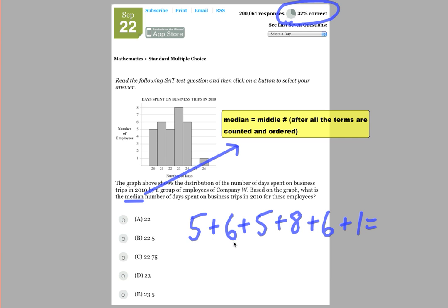Okay, so let's add that up. Five and six is 11, plus five is 16, plus eight is 24, plus six is 30, plus one is 31. So there's 31 terms. Now if you have 31 terms, then what that tells me is that the 16th term is going to be the median.